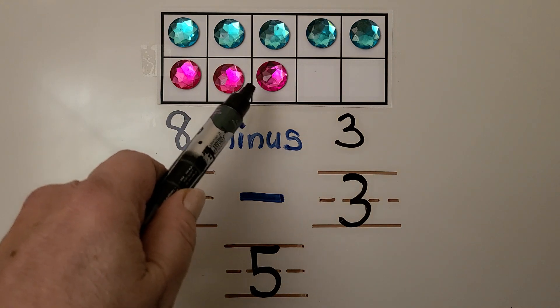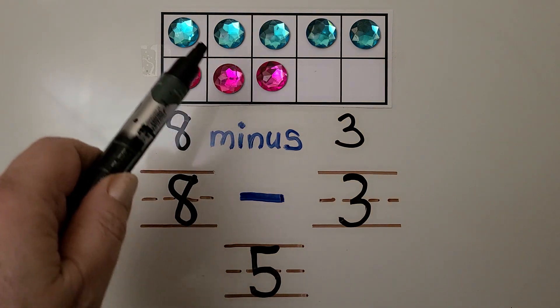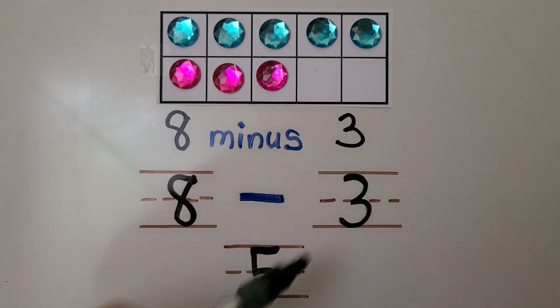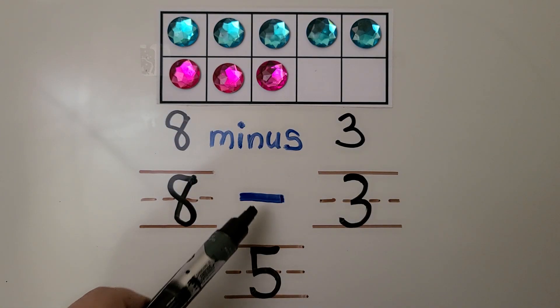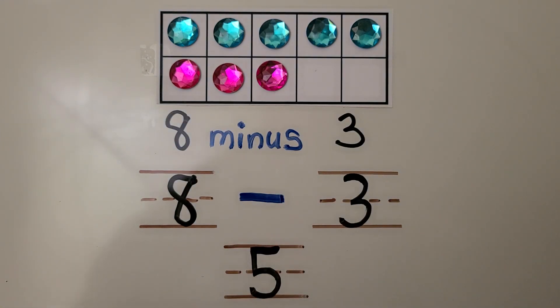If we take these 3 pink ones away, we have 1, 2, 3, 4, 5 that are left. 8 minus 3 is 5.